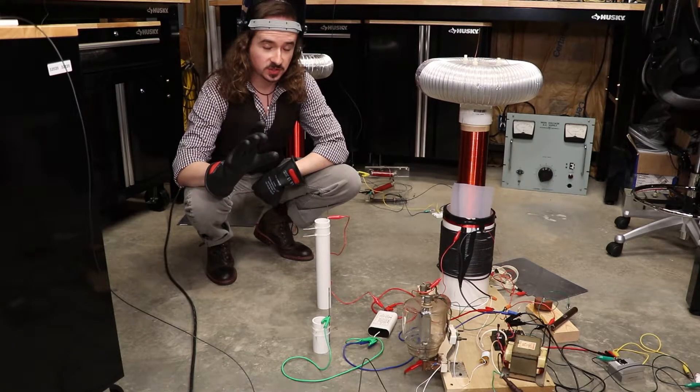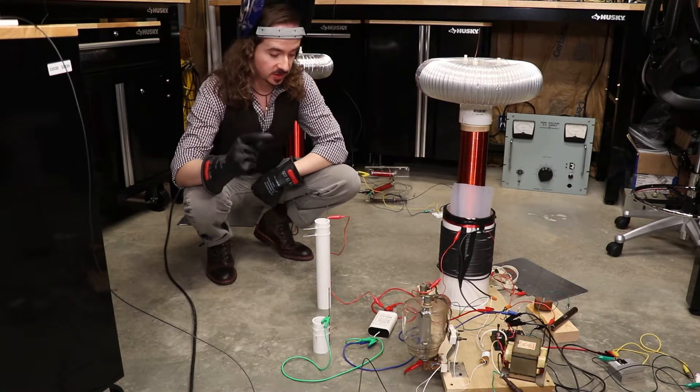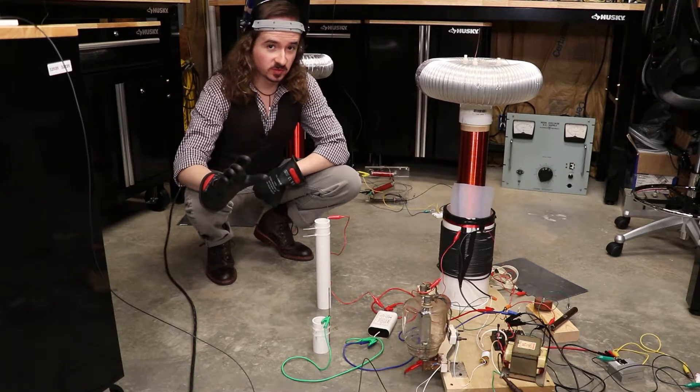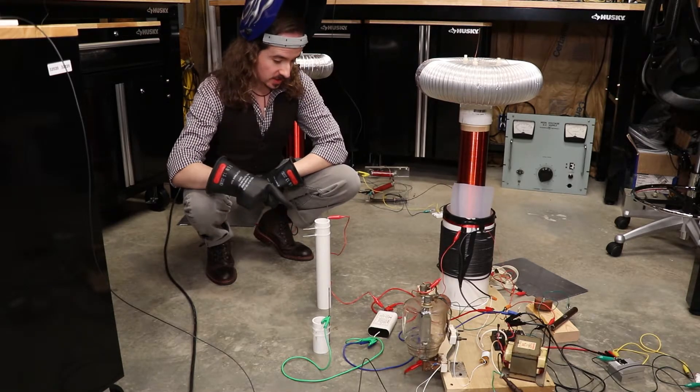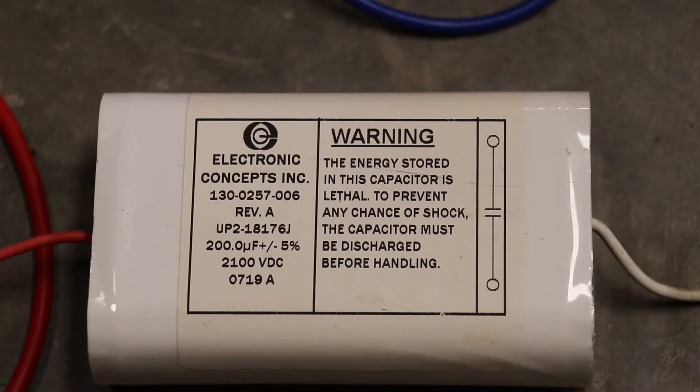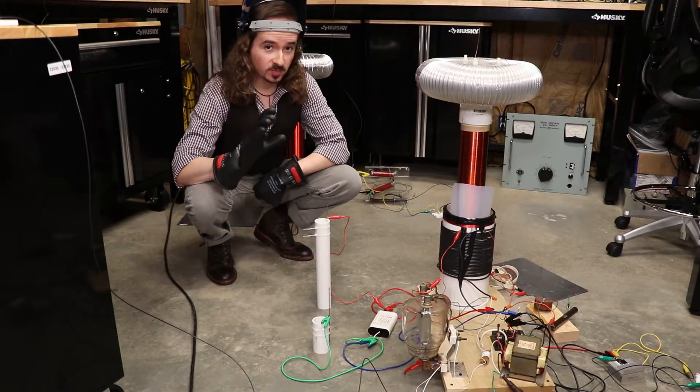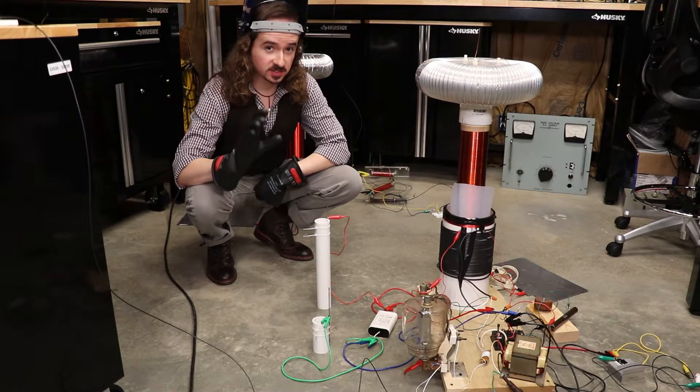Also, in order to get smooth DC, I needed a big smoothing capacitor. Adding that to the circuit made this significantly more dangerous, however. It even says right here on the capacitor, the energy stored in this capacitor is lethal. So on today's how much will this kill you meter, this gets a 5 out of 5.